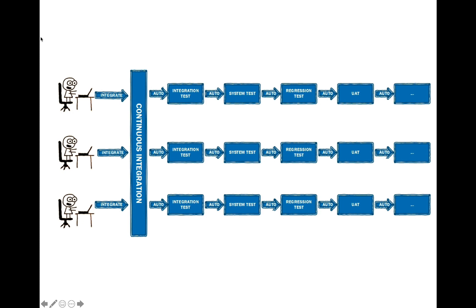Every time a developer commits code, that will initiate a build process. And those builds can happen in parallel. In a Git system, you would have developers committing code and pushing it to an upstream repository in a shared master branch, and they're initiating pull requests — requests to merge their code into the master branch. Every time they create a pull request, that will automatically initiate a code pipeline where the code that they want to merge is going to be unit tested and linted.